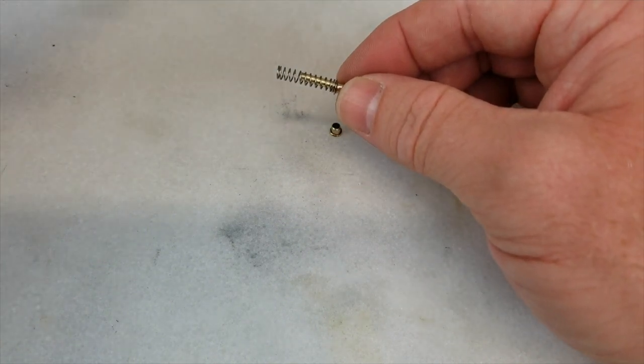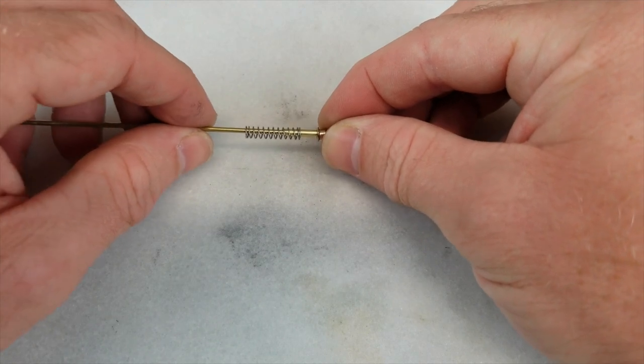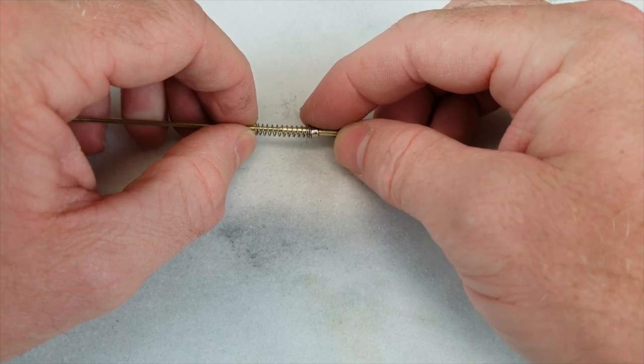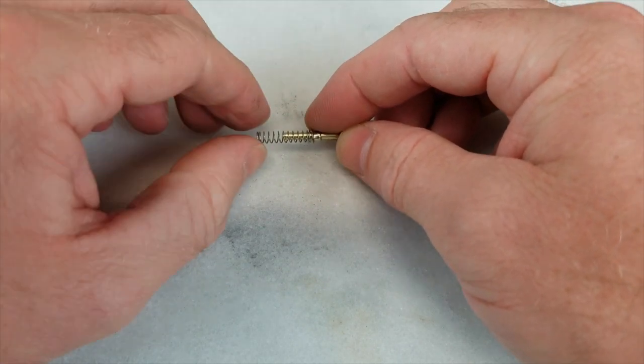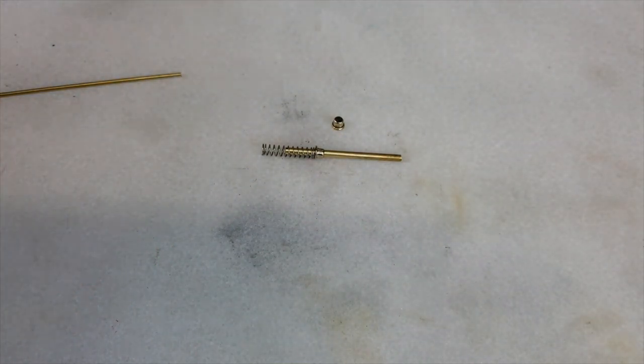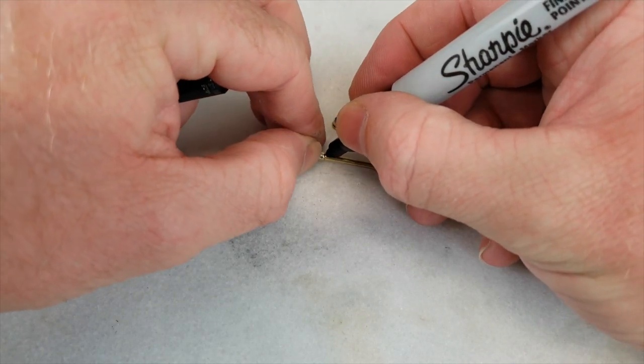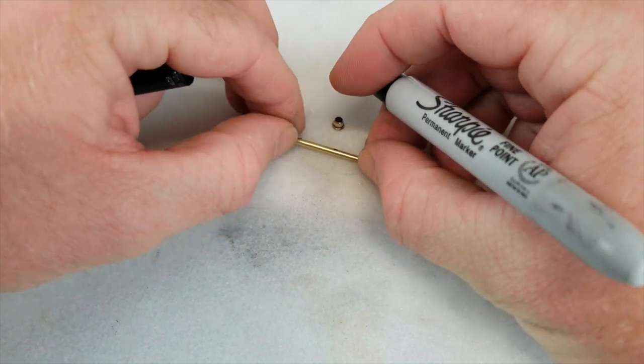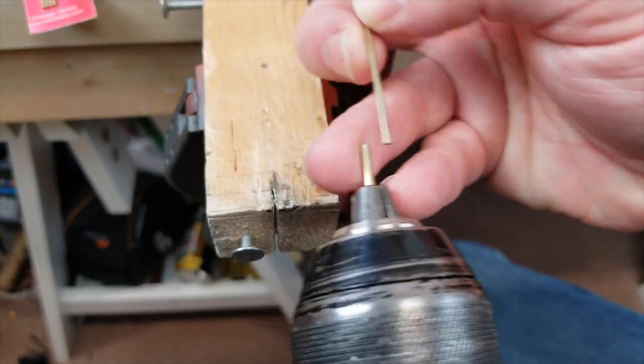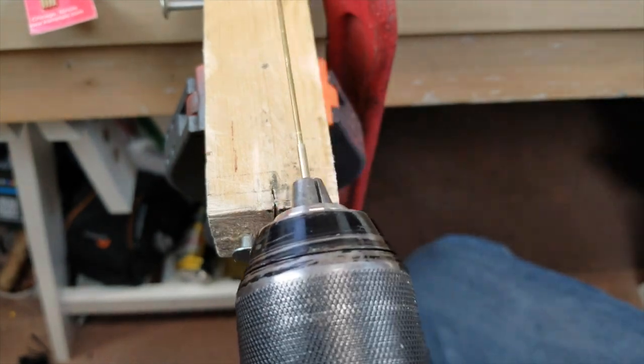Of course if you're making multiples you don't have to do the mock up every time. You can do it just once and then cut everything out. Using the same method as the eyelets I cut the 3/32nds tube on the mark I just made.